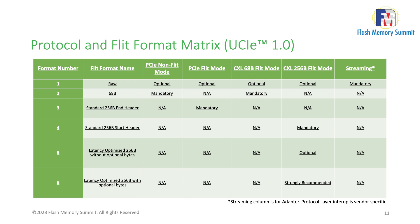The standard 256-byte end-header is the name picked for the PCIe standard flit format, mandatory for PCIe flit mode. The standard 256-byte start-header is for the CXL flit format — the main difference being whether the flit header is at the beginning or the end of the flit. For CXL, the 256-byte start-header is mandatory for the 256-byte flit mode protocols, covering all CXL 3.0 specification features. The latency-optimized flits apply to CXL 256-byte flit mode, and we strongly recommend the enhanced efficiency latency-optimized flit for better die-to-die efficiency.